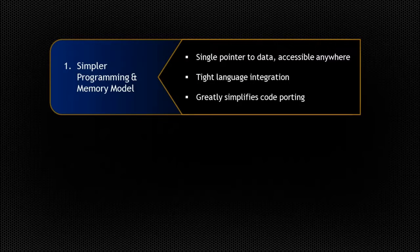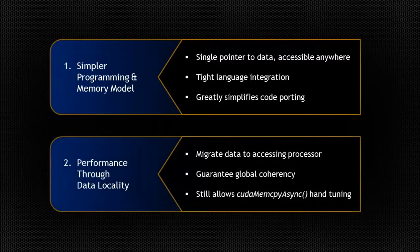Unified Memory lowers the bar of entry to parallel programming on the Cuda platform by making device memory management an optimization rather than a requirement, so you can get straight to the task of developing Cuda parallel kernels. By migrating data on demand between the CPU and GPU, Unified Memory can offer the performance of local data on the GPU while providing the ease of use of globally shared data. The complexity of this functionality is kept under the covers of the Cuda driver and runtime, ensuring the application code is simpler to write. The point of migration is to achieve full bandwidth from each processor. The 250 gigabytes of GDDR5 memory is vital to feeding the compute throughput of a Kepler GPU.